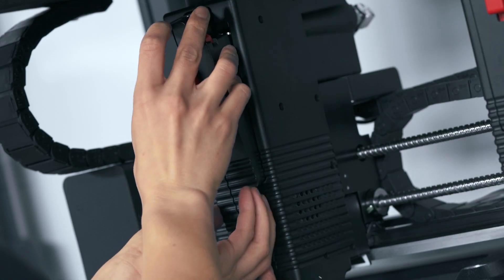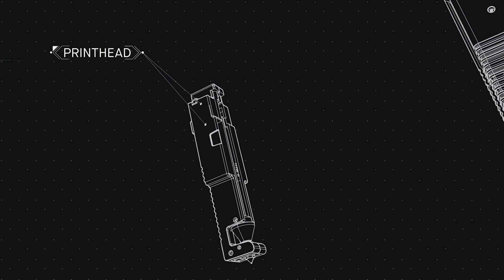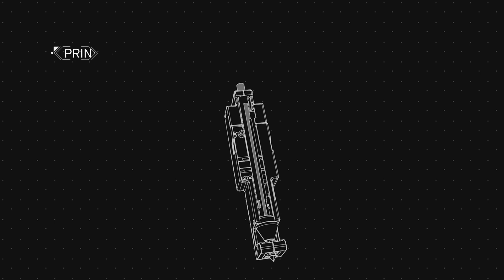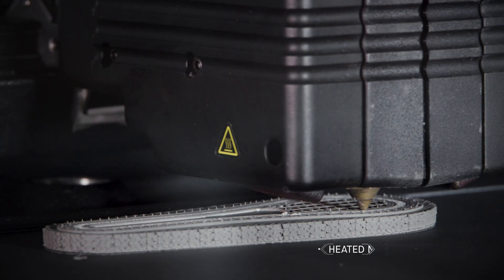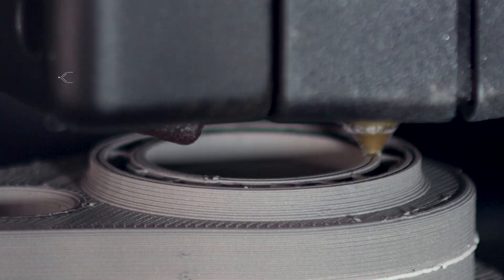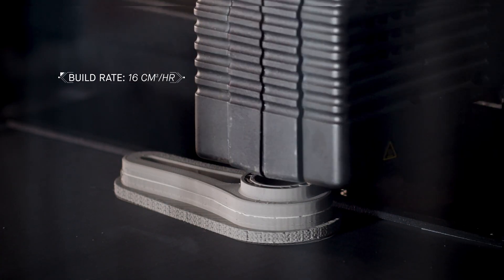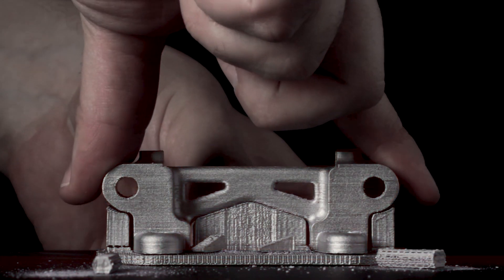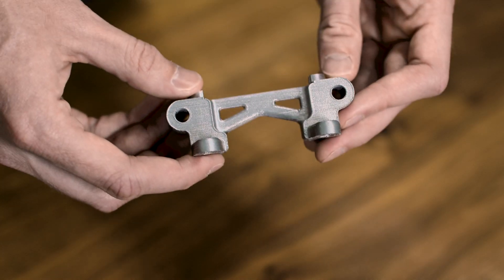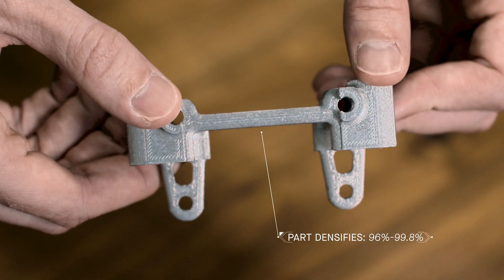In a process called bound metal deposition, rods made out of metal powder held together by a wax binder are extruded from a metal nozzle onto a build plate and shape the part layer by layer, very similar to the FDM process. After printing, the parts are heated to near melting temperature of the metal, removing 100% of the binder and densifying the metal powder up to 99.8%.